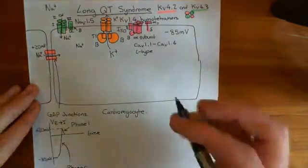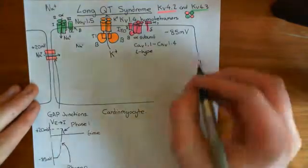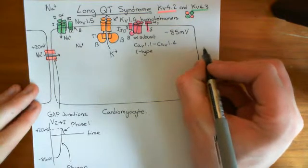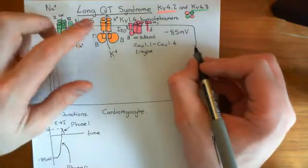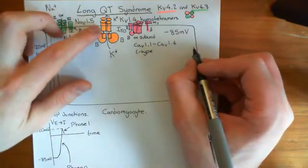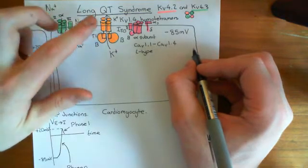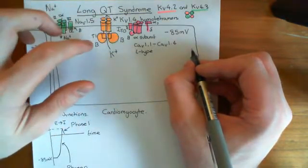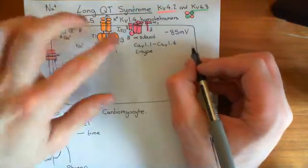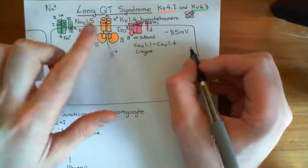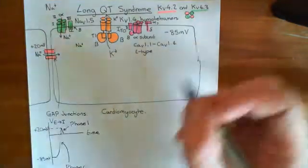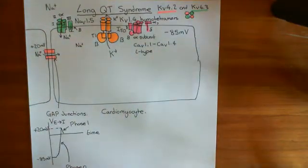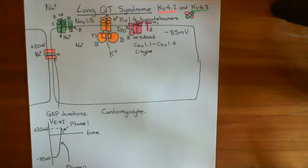So delayed rectifier potassium channels is the next topic. The delayed rectifier potassium channels have very similar structures to the voltage-gated potassium channels we've discussed already — namely those involved in the transient outward current. But there is one that's very different from normal potassium channels, so we need to discuss this one separately.